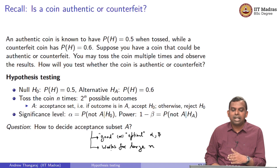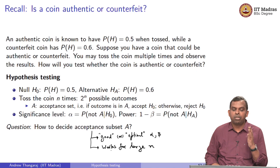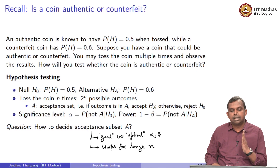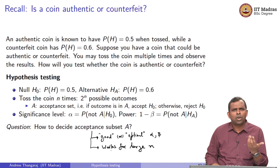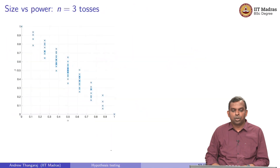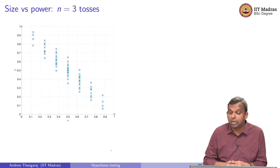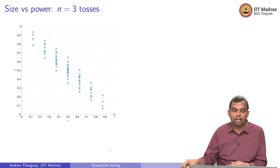The likelihood ratio test will work in most contexts — in fact, all contexts — where you have a simple null hypothesis and a simple alternative hypothesis. So let us go back and revisit the size versus power trade-off.